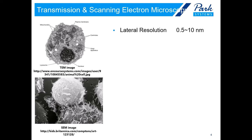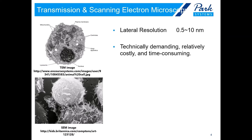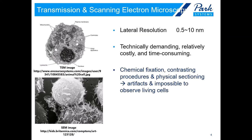An early and powerful approach to obtain more detailed information is by using electrons instead of photons. Electron microscopy is able to achieve up to 100 times greater resolving power. However, state-of-the-art transmission and scanning electron microscopy techniques are technically demanding, relatively costly, and time-consuming. Chemical fixation and other procedures like physical sectioning make specimens vulnerable to artifacts and prevent us from observing living cells or organisms at high resolution in their undisturbed state.